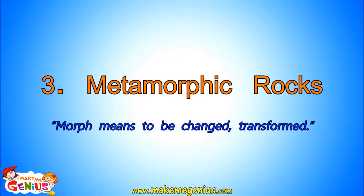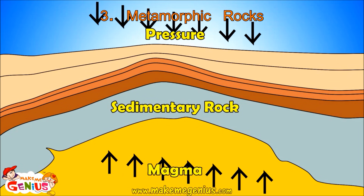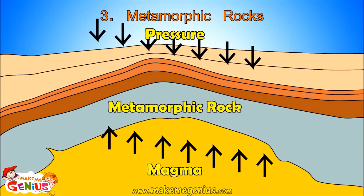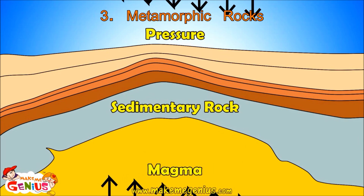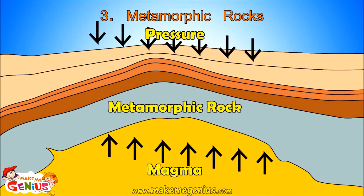Let's learn about the third type of rock — metamorphic rocks. Metamorphic is derived from the word morph, which means to be transformed or to change. Metamorphic rocks are changed forms of igneous and sedimentary rocks. They are formed when other types of rocks are changed due to a lot of heat or pressure. In this picture, a lot of heat from molten magma and a lot of pressure from upper layers is causing some of the sedimentary rocks to change.